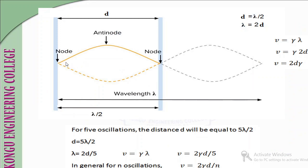From the theory of standing waves, the distance between two consecutive nodes is equal to half the wavelength. So if we take this distance as D, then D = λ/2, which gives λ = 2D.